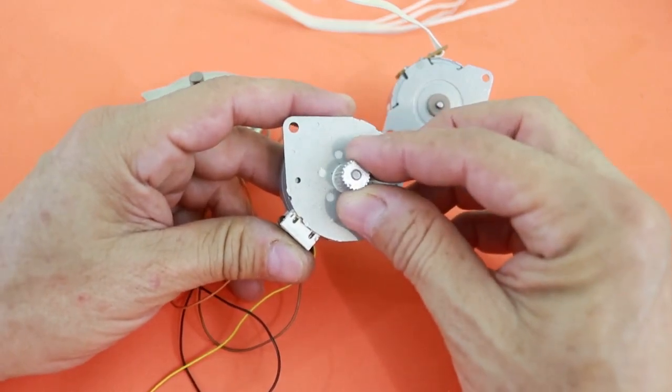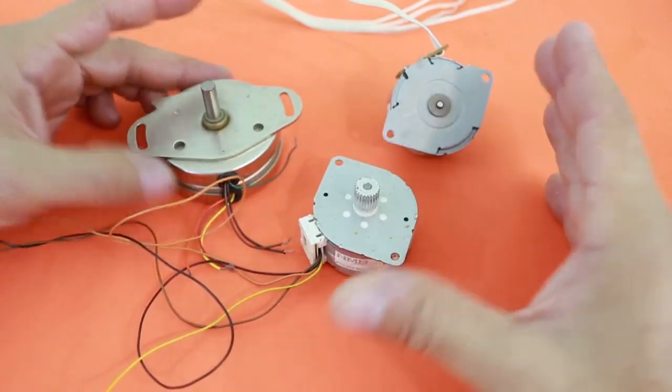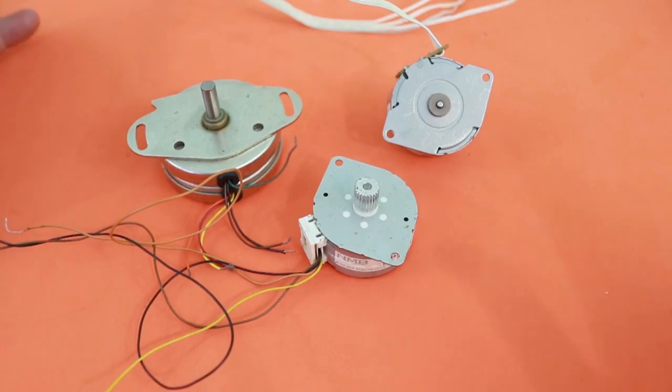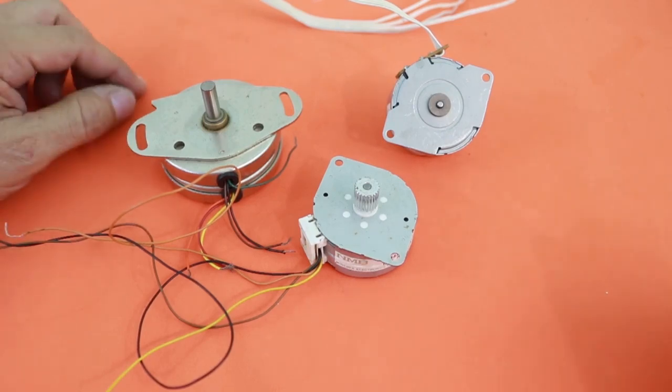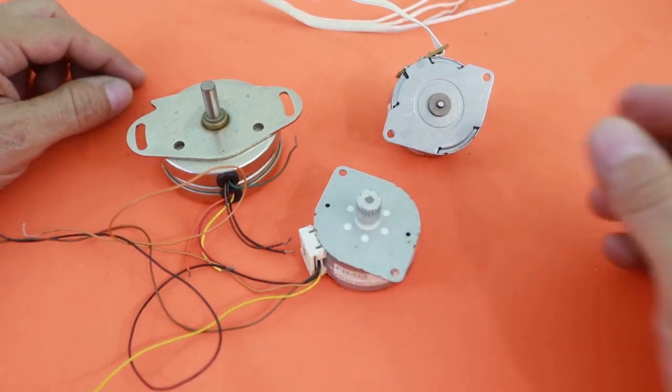They move step by step, a few degrees at a time, and that makes them very useful when you need a precise control of the motion. For example, in printers, normal printers, 3D printers, and other applications when the precise control of the movement is needed.